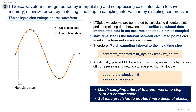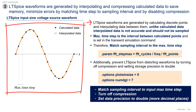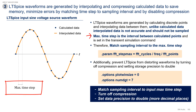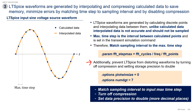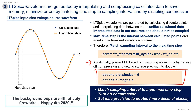With the input waveform parameters set, we need to consider input waveform distortion. LTSpice waveforms are generated by calculating discrete points and interpolating data between them. Only calculated data points are distortion-free; interpolated data is not accurate and should not be sampled. To avoid sampling interpolated data, we match the sampling interval to the maximum time step using a variable FFT step max, which is used in the transient command. Finally, to prevent LTSpice from distorting the calculated data, we turn off compression and set precision to double precision by setting the option plot wind size to 0 and the option num digits to 7 or more.